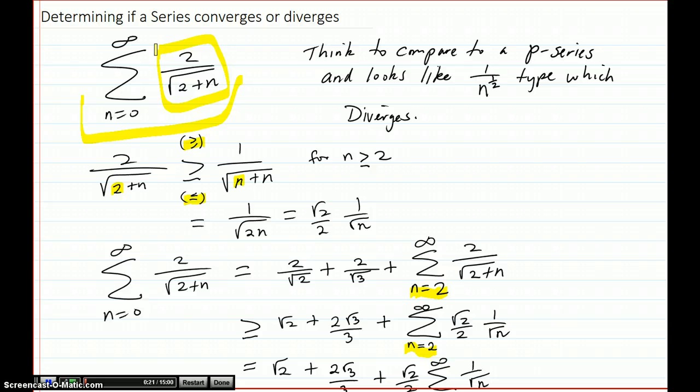So we're going to think about comparing it to a p-series, one of those 1 over n to the p type. And this one looks like 1 over n to the 1 half, 1 over the square root of n. It looks like those terms are looking like that. So all we have to do is maneuver our terms to be greater than these terms to show that our series diverges.